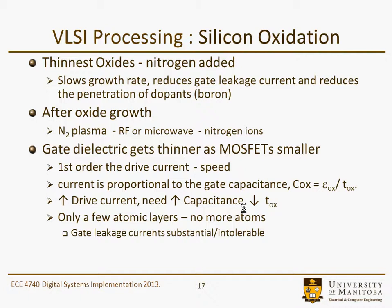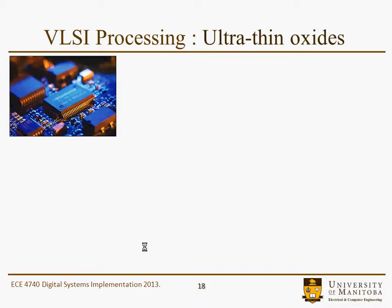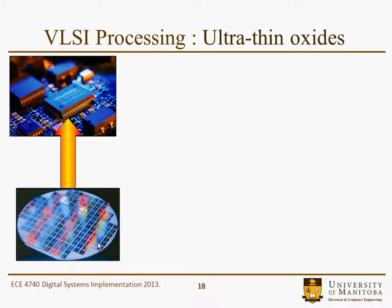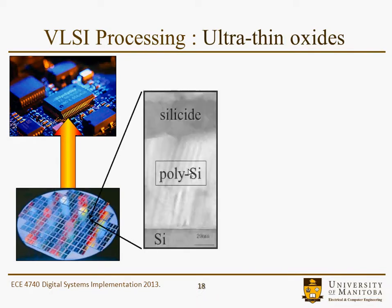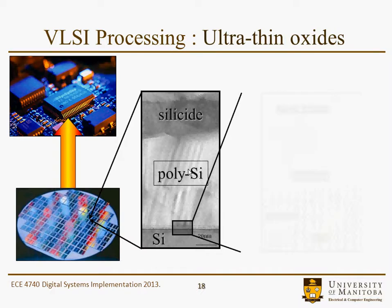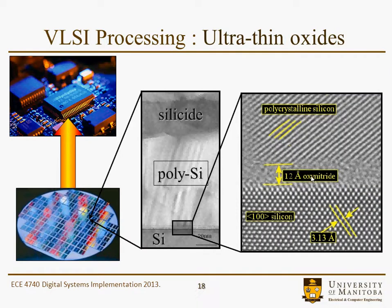Gate dielectrics tend to get thinner as MOSFETs get smaller — a consequence of the scaling laws we looked at earlier. We want current drive to increase, which requires capacitance to increase. The capacitance expression shows we need to make the oxide thickness thinner, but you're running out of atoms, so that's no longer a possibility. To get perspective, there's a chip containing a diced die from a wafer, with multiple layers, including an instance here where we're looking at a gate dielectric.